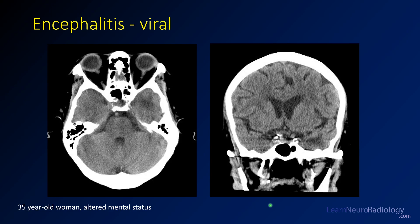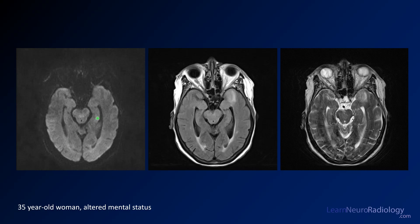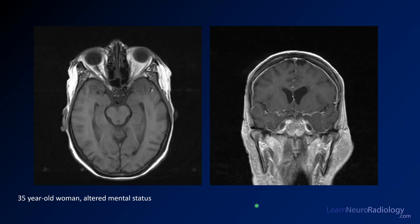This is a 35-year-old woman with altered mental status. CT shows subtle hypodensity in the left medial temporal lobe. On MRI, diffusion is relatively normal, but FLAIR and T2 show hyperintensity in the medial temporal lobe — a common location for encephalitis that should particularly suggest herpes. These patients need immediate treatment with acyclovir and antiviral medications. However, there is not much enhancement on post-contrast imaging here. This case ended up being VZV or EBV encephalitis — a viral encephalitis but not herpes.